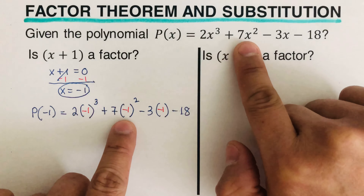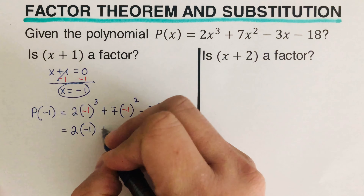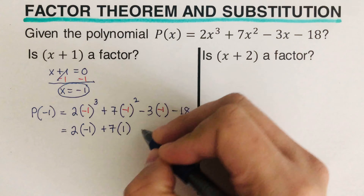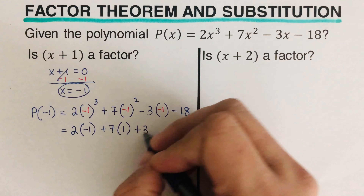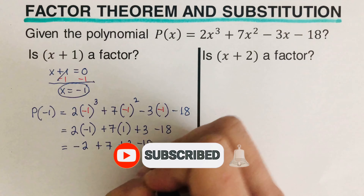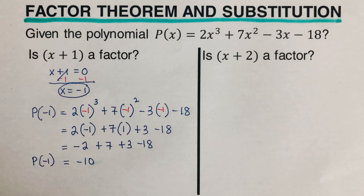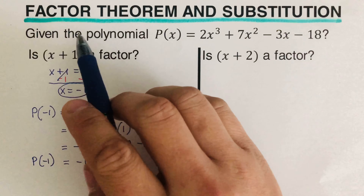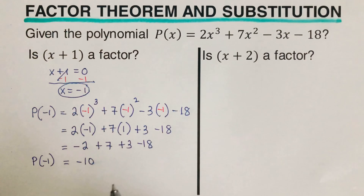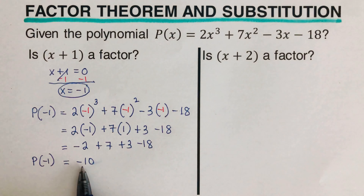Let's do the math. Negative one cubed is negative one, so two times negative one is negative two. Negative one squared is positive one, so seven times one is seven. Negative three times negative one is positive three, minus 18. That simplifies to negative two plus seven plus three minus 18, which equals negative 10. Since p of negative one equals negative 10, which is not zero, x plus one is not a factor.